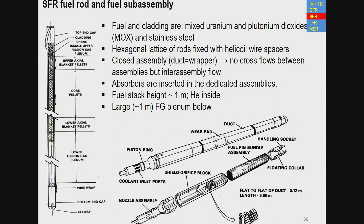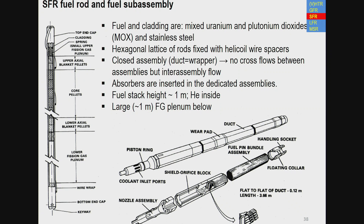The fuel stack is about 1 meter with helium fill gas inside the fuel rod, and a large ~1 meter fission gas plenum located below the fuel. The plenum is placed below rather than above so that it contacts colder sodium, keeping gas pressure lower — if placed above it would contact hotter sodium and gas pressure would be significantly higher.